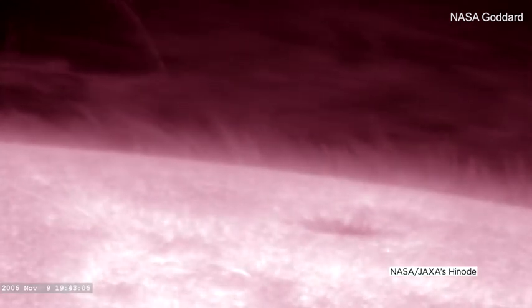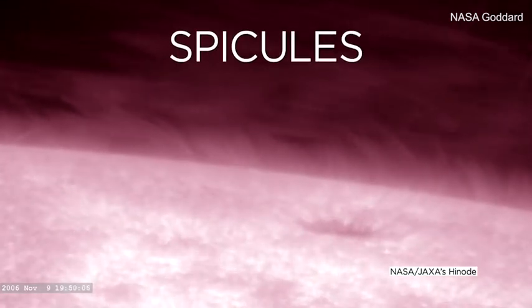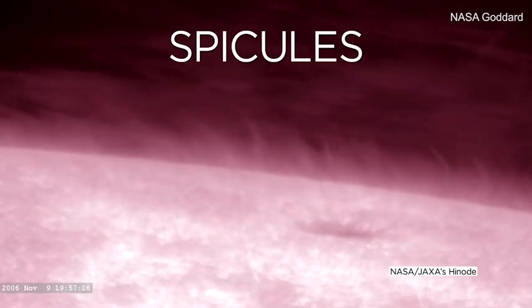A new NASA-funded study has revealed the origins of spicules, lengthy jets of plasma on the sun's surface.